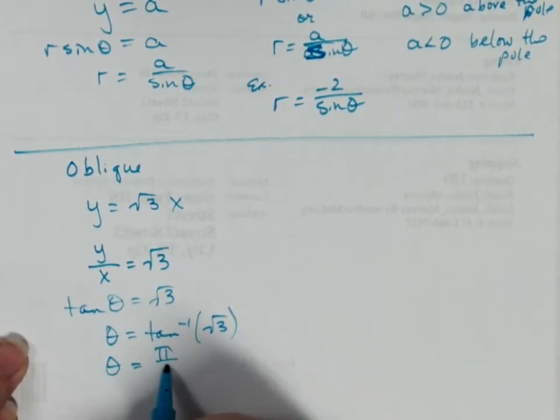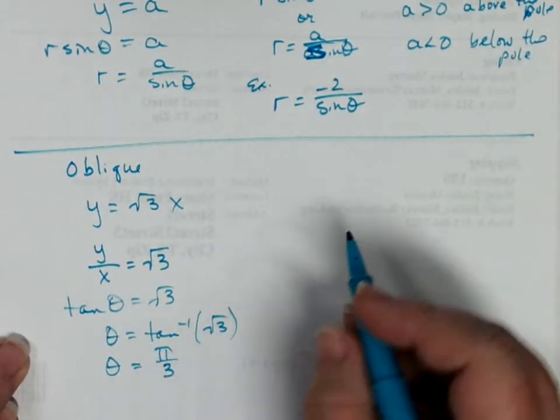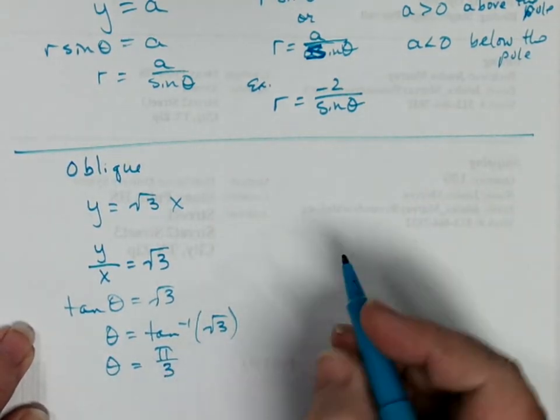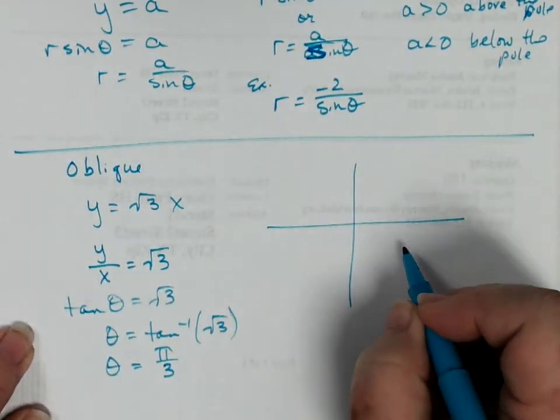Well, what that means is this is actually the oblique line that goes through the angle pi over 3. So this one was actually easier to graph on paper, so I'm going to show you how I would do that.